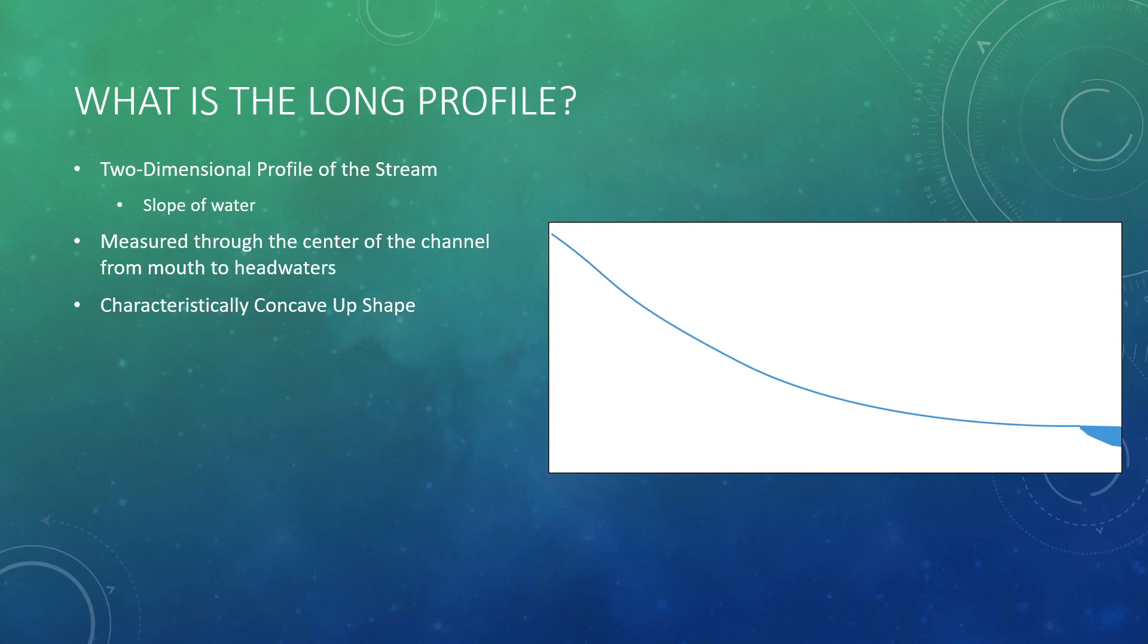We typically think of streams in a constant state of adjustment, working towards a graded or equilibrium state, where there are balances between energy and transport. In this example profile of an alluvial river, we can see that the long profile is ideally represented by a concave up shape.